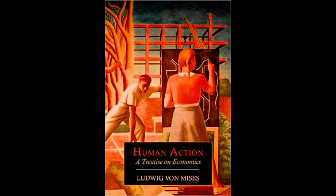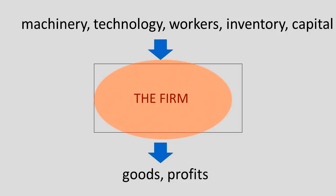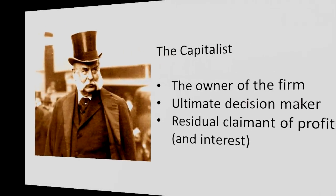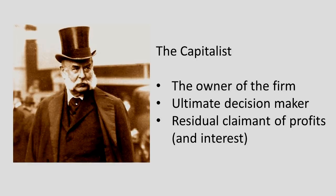The firm is not some amorphous body — it is made up of individuals, real people, making decisions and acting in the real world. In this video, I want to look inside the firm and understand its various functions. The first function is that of the capitalist: the owner of the firm, the ultimate decision maker, the residual claimant of profits and interest.